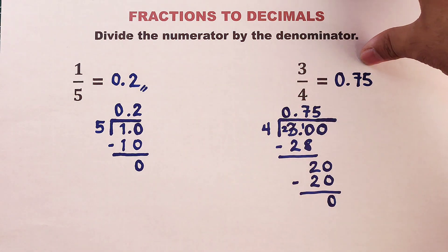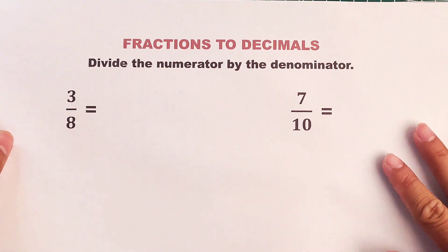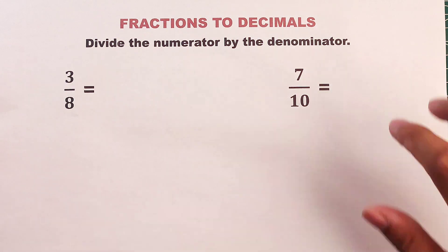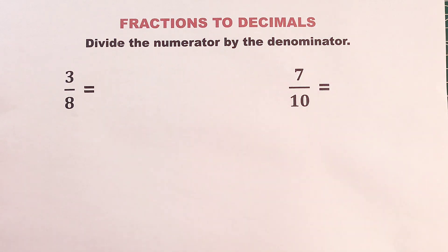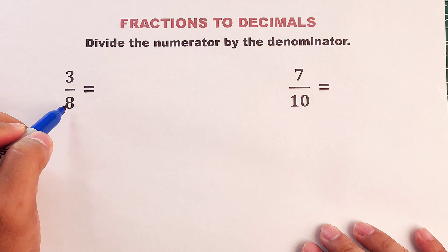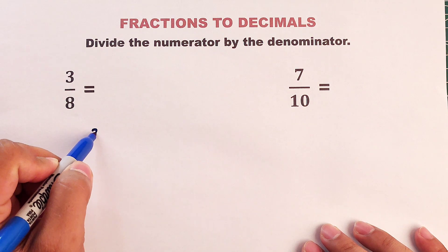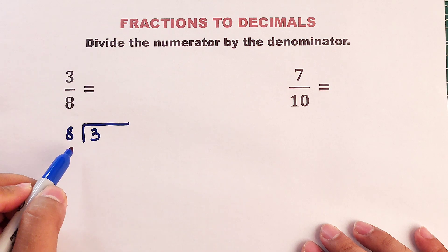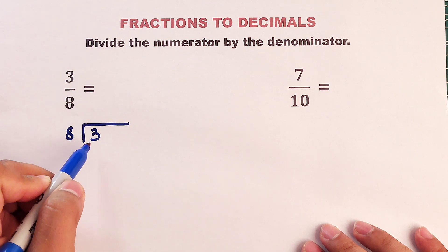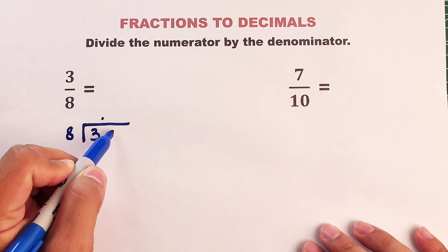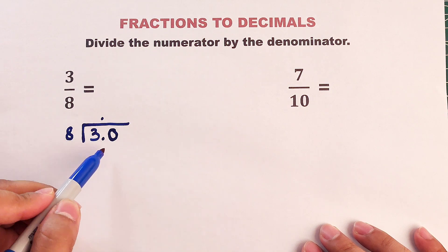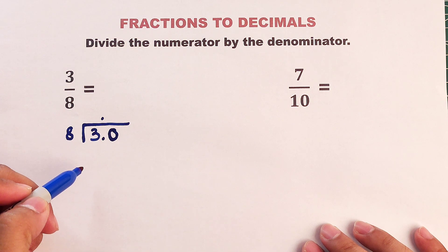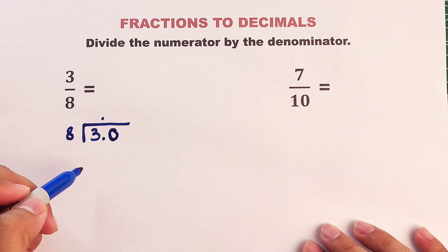Now let's proceed with our next examples. So what we have here is the third and the fourth example. We have 3 over 8. This is your numerator, and this is your denominator. Let's divide 3 by 8. So as usual, this one cannot be. So we will put a decimal here, and also here. We will place a 0 here so we can divide this by 8. 30 divided by 8. How many 8s do we have in 30? We have 3.